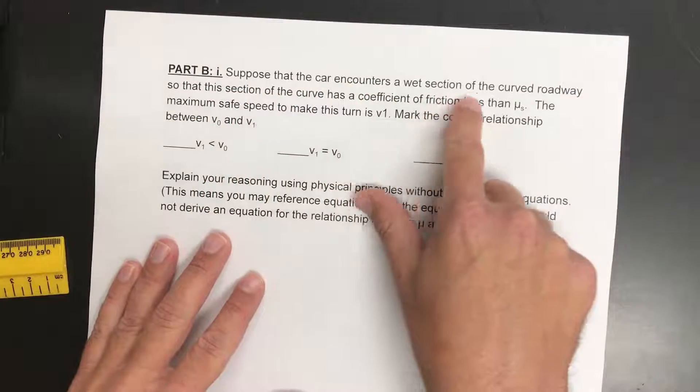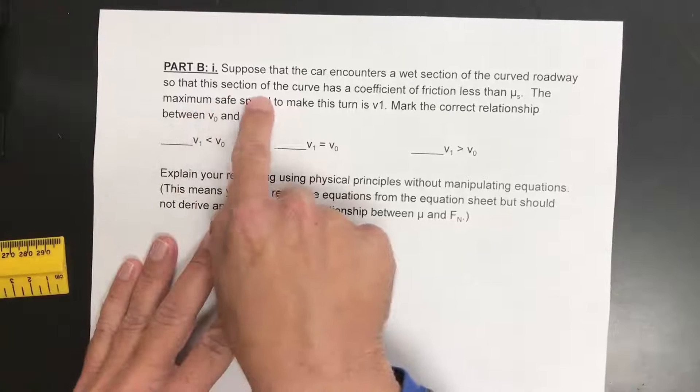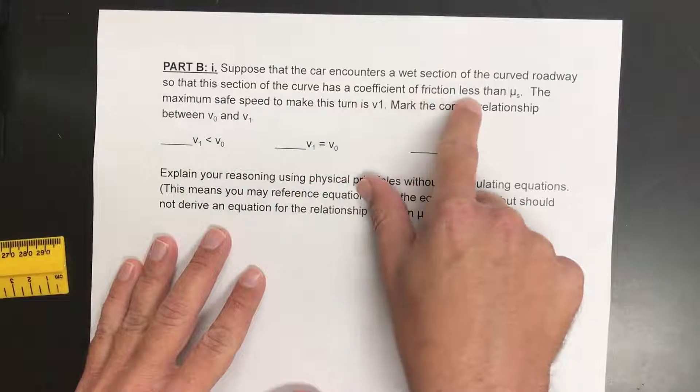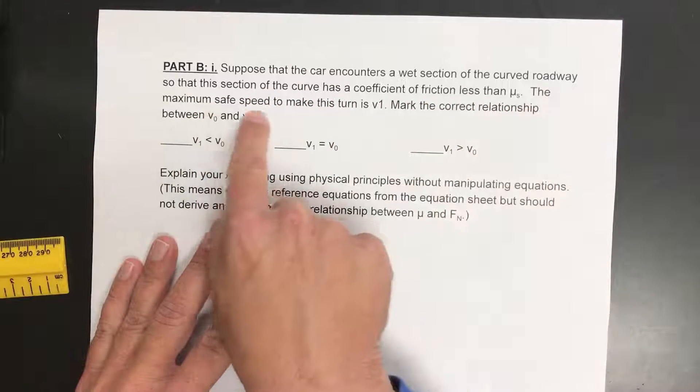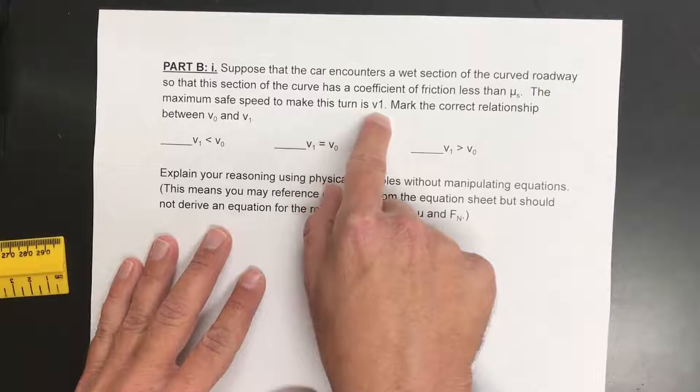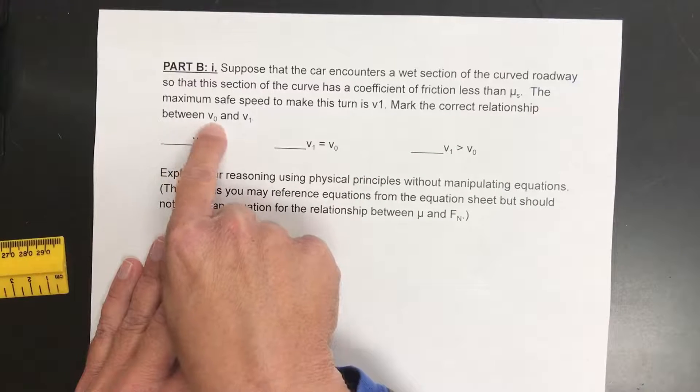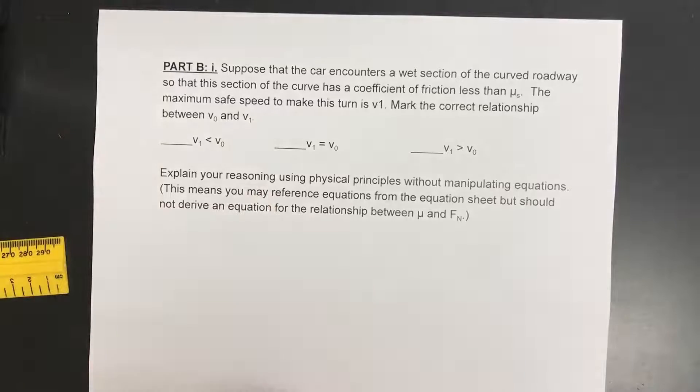It says suppose that the car encounters a wet section of the curved roadway so that this section of the curve has a coefficient of friction less than mu sub s. The maximum safe speed to make this turn is v sub 1. Mark the correct relationship between v0 and v1.